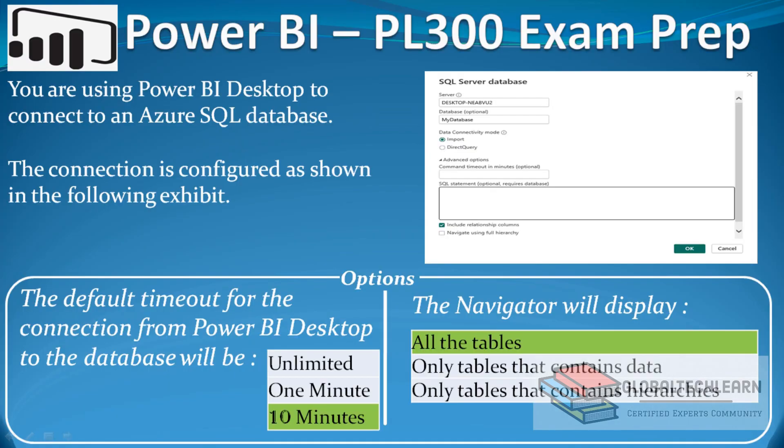So to summarize: for the first question, the default timeout for the connection from Power BI desktop to the database is 10 minutes. For the second question, the navigator will display all the tables, whether they contain data or not. So the first option — all tables — is the correct answer.